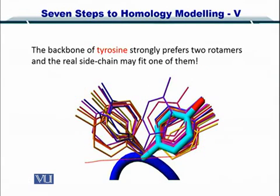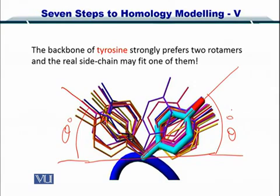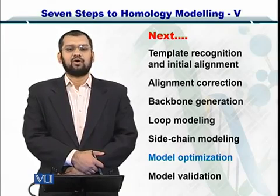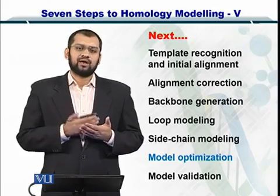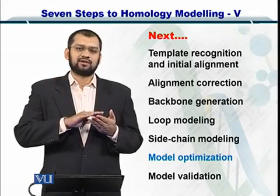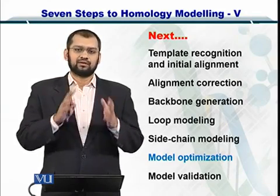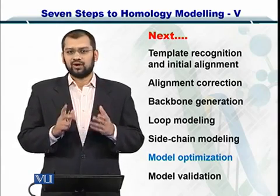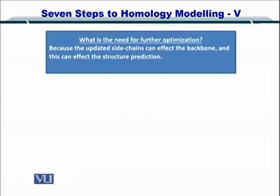By looking at the preference of tyrosine, you can set the torsion angle — that is, the angle between the backbone carbon alphas and nitrogens. These two angles are preferred, and therefore you can attach the rotamer side chain according to that preference. The next step is the optimization of this model. One would argue that we have properly constructed the backbone, inserted the side chains, loops, and turns, followed by insertion of the rotamers — so why do we need to optimize further? The answer is that once you insert the rotamers, they can create steric hindrance or electrostatic interactions that cause the structure to become unstable.